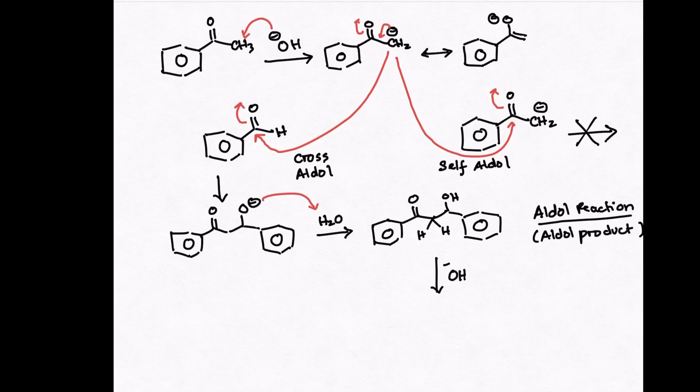Next, dehydration of the intermediate using the base catalyst yields the final product, chalcone, which is the aldol condensation product.